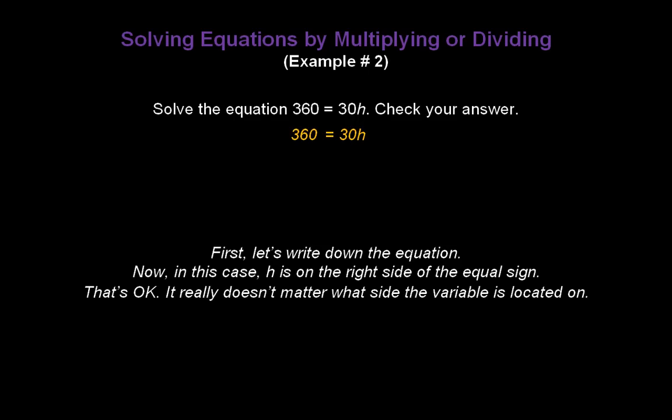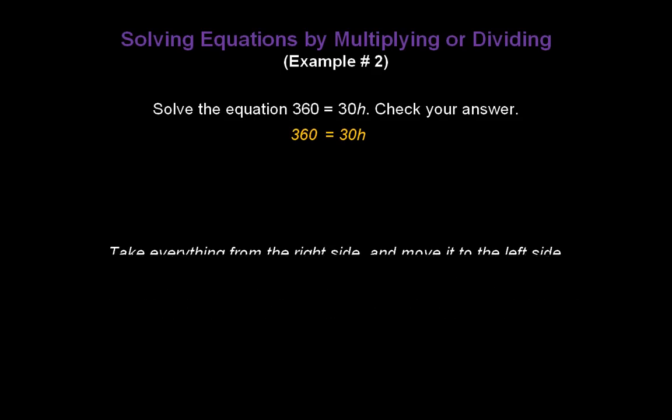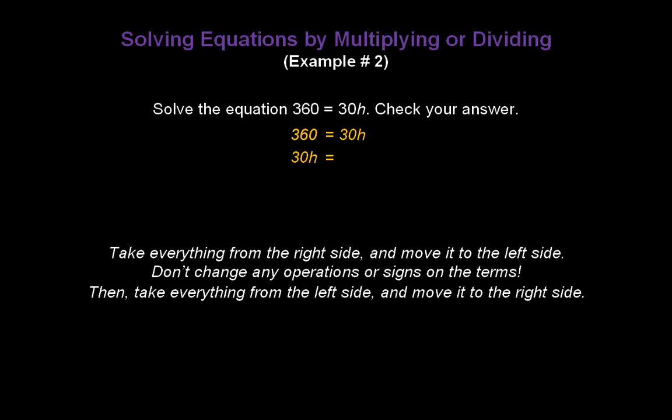Now, that's okay, because it really doesn't matter what side the variable is located on. But for consistency, let's go ahead and move it to the left-hand side, because that's where I've had all of the variables in prior examples. This is really easy to do, and let me show you how we do that. Take everything from the right side and move it to the left side. And don't change any operations or signs on the terms. Take it in bulk and just move it over just like this. So now the 30h is on the left. And then take everything from the left side and move it to the right. Just like that. And there you are. It's as simple as that. You're done.